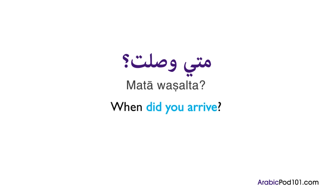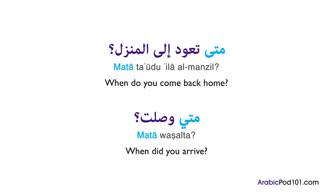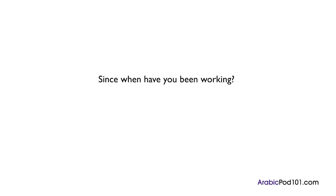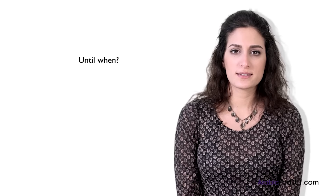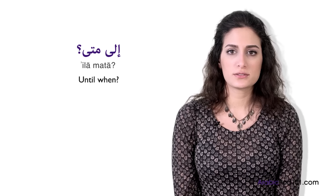You can use the word متى to talk about any moment, whether past or present. If you want to ask a question about duration — as in 'Since when have you been working?' — you will say: منذ متى تعمل؟ Here منذ means 'since,' so منذ متى means 'since when.' For 'until when,' it becomes: إلى متى. For example, 'until when will you work?': إلى متى ستعمل؟ For a woman: إلى متى ستعملين؟